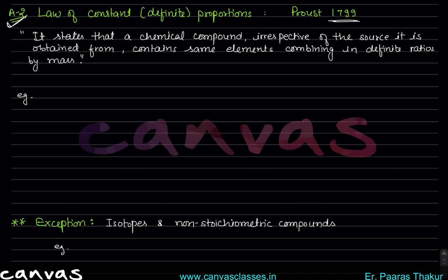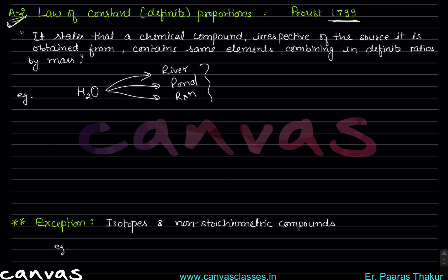What does constant proportion say? Consider any compound — let's take water. Water can come from a river, a pond, from a chemical reaction, from the market, tap water, or ground water — multiple sources. But no matter where the water comes from, the ratio of hydrogen and oxygen inside it will always be: 2 gram hydrogen combines with 16 gram oxygen to form 18 gram H2O. So the mass ratio of hydrogen to oxygen is 2:16, or 1:8.